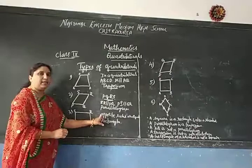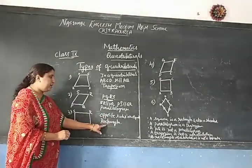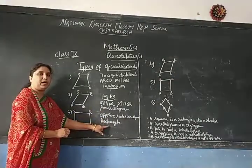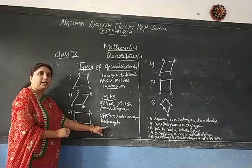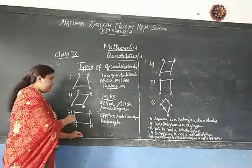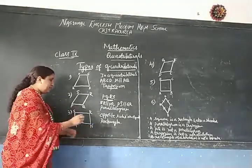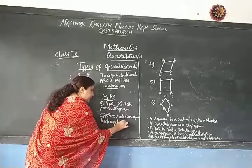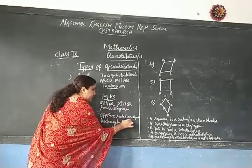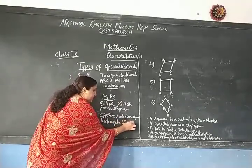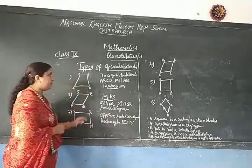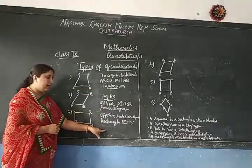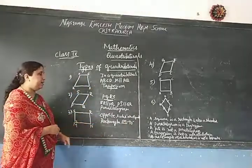It is called a special parallelogram because the properties of a parallelogram are true for a rectangle. Here, opposite sides are equal and angle MN is a right angle equal to 90 degrees. So this is trapezium, parallelogram, and rectangle.